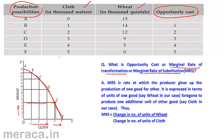Opportunity cost is the rate at which the producer gives up production of one good for another. So if you take a close look at point B, the producer is giving up one unit of wheat for producing one unit of cloth. Similarly, at point E, the producer is giving up four units of wheat for producing one unit of cloth.